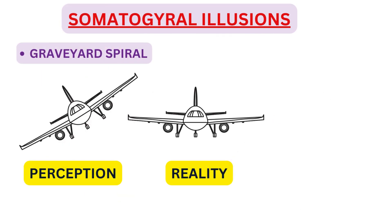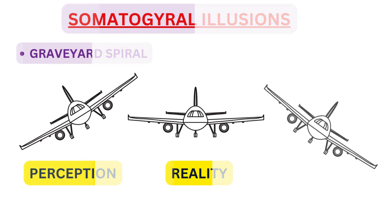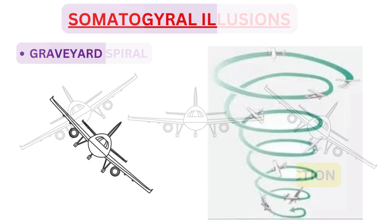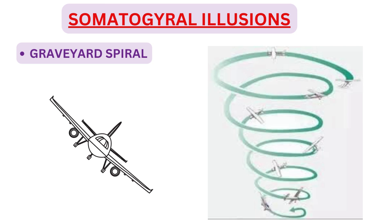The next SD in the category of somatogyral is the graveyard spiral. The graveyard spiral is a situation which, at the beginning, is similar to the leans. But here, the pilot instead of flying the aeroplane straight and level and leaning to one side, tries to resolve his feeling of a right bank by rolling left, and finally ends up in an uncontrolled spiral. Excess bank to the left will result in descent, causing the pilot to pull back on the control column. A backward force on the stick with the left wing down will further increase the rate of descent, and finally the aeroplane will enter a spiral — that is why it is called the graveyard spiral.